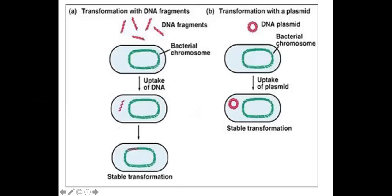Up here is a picture of how that actually happens. There's our DNA at the top that we cut — and what do we cut it with? Restriction enzymes. Then we take that DNA, that virus, the vector, and we put it in. And then eventually those proteins can now be expressed from the new genes.